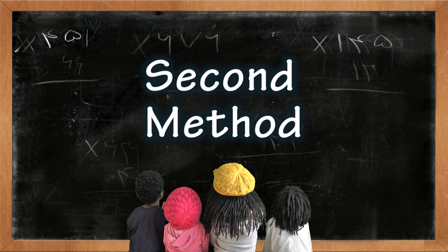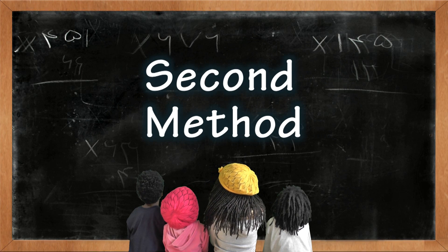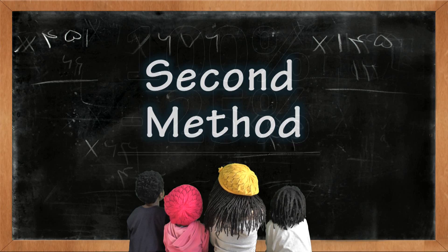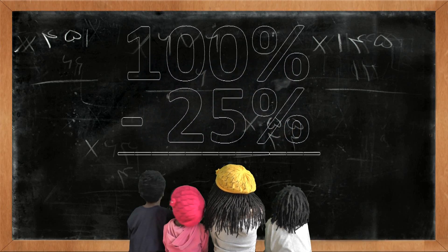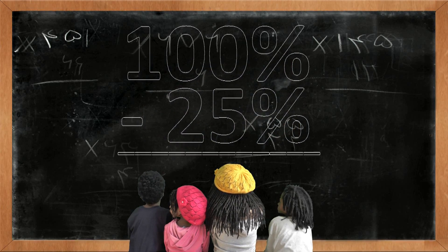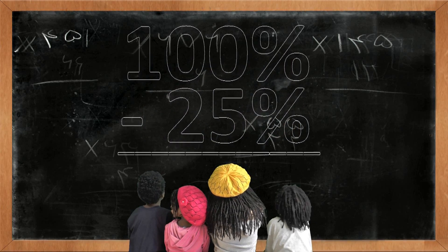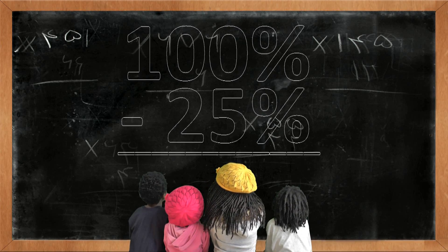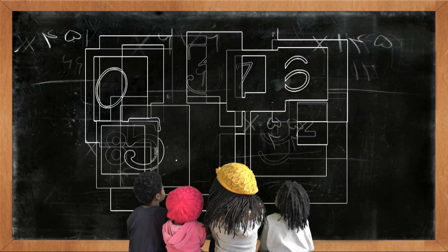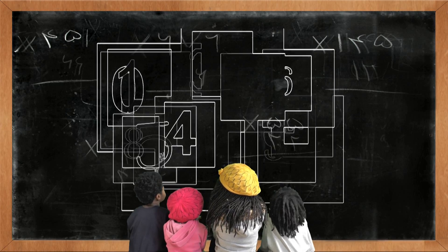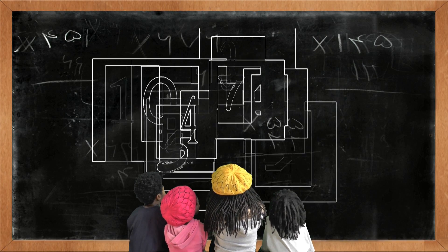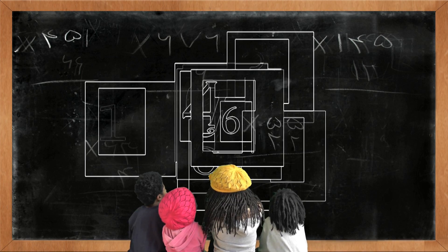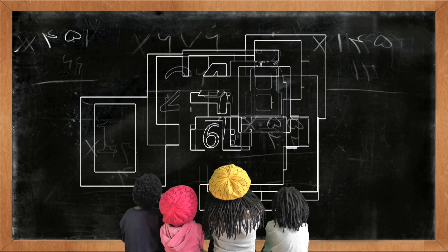Now here's the second method. First you want to subtract the 25% from 100%. When you get your answer, convert that number to a decimal. You will then multiply that number by 250 to get your final answer. This will be the solution to this math problem.